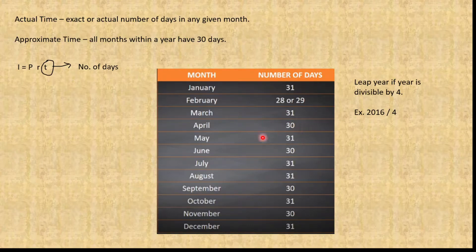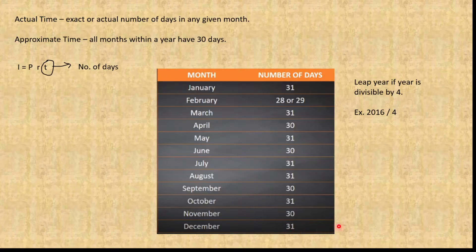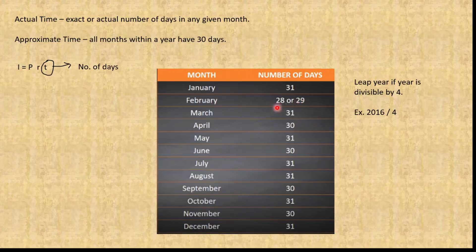Continuing: May has 31, June is 30, and so on through December. For leap years, we use 29 days for February; if it is not a leap year, we use 28.